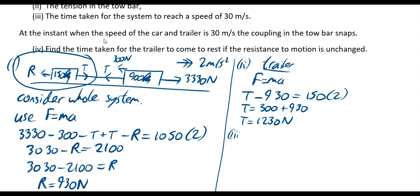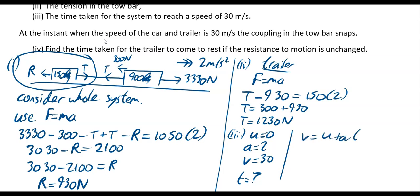Part three asks for the time taken for the system to reach a speed of 30 m/s from rest. Using v = u + at: u = 0, a = 2, v = 30. So 30 = 0 + 2t, giving t = 15 seconds.